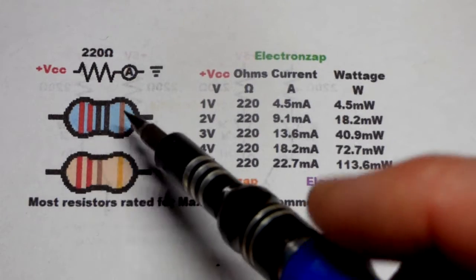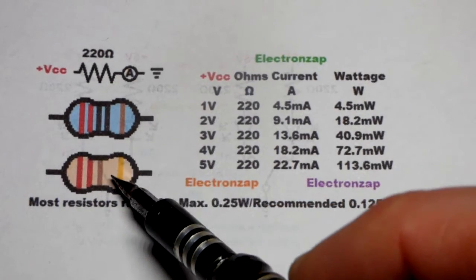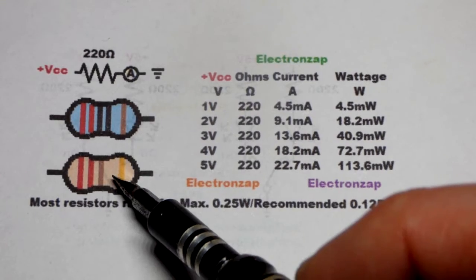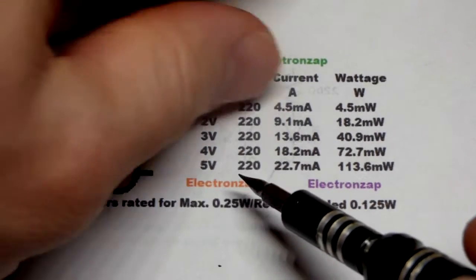So now in this video I thought we would do a quick review of the 220 ohm resistor. I use it quite a bit in 5 volt circuits.